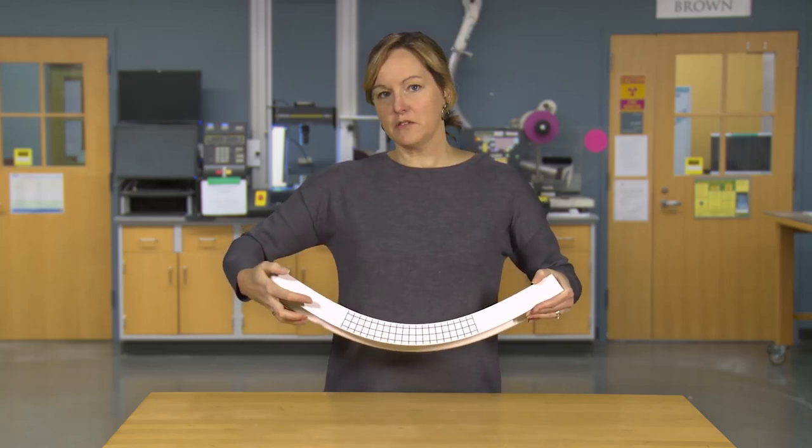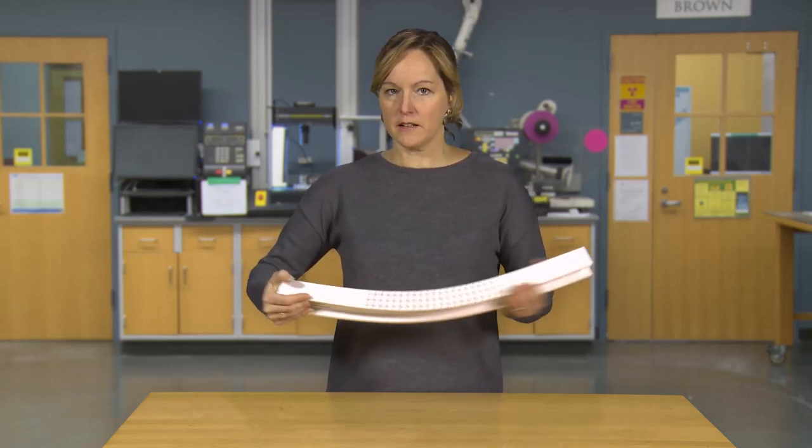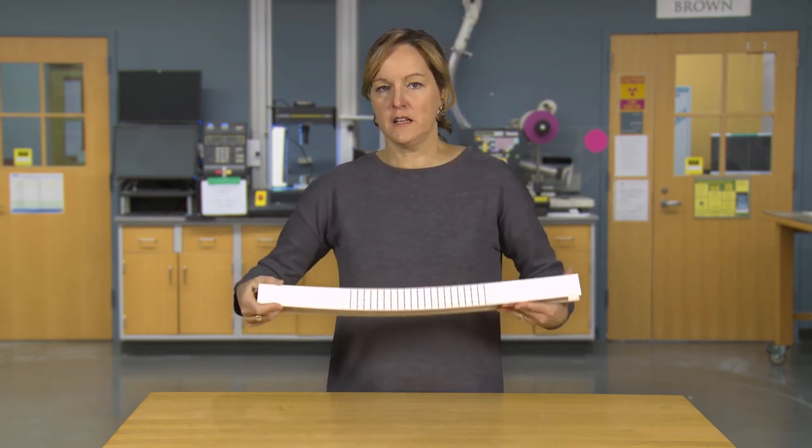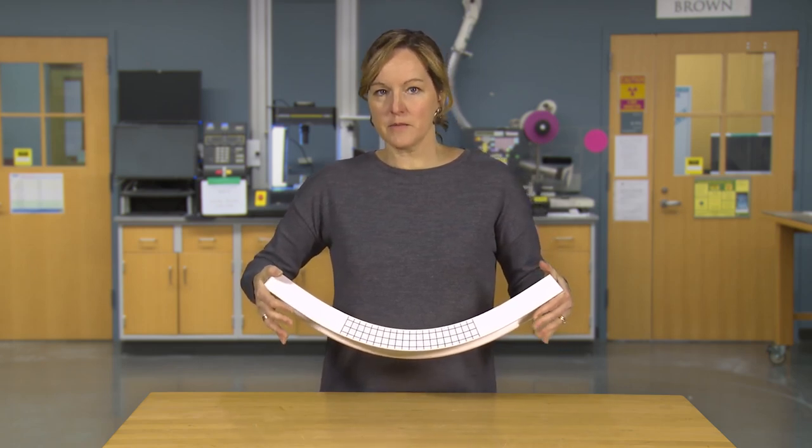Somewhere along that height we'll have a zero line. It's called the neutral line where there's zero stress. If we go from tension to compression, we have to go through a place where there's no stress.